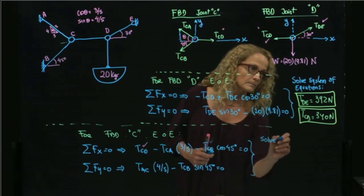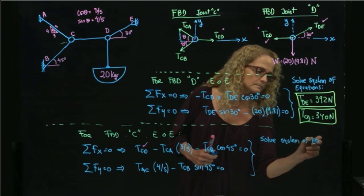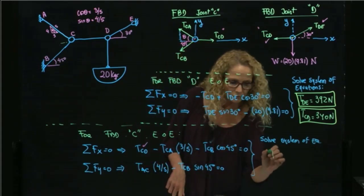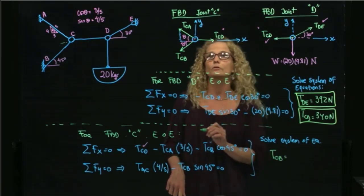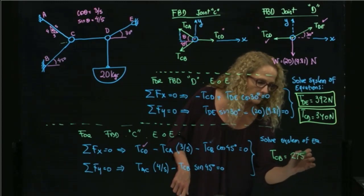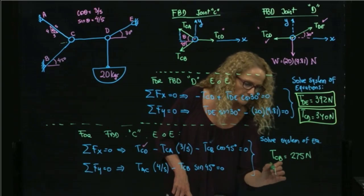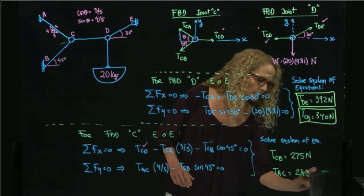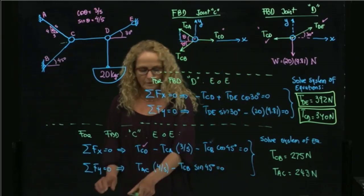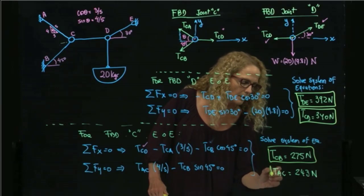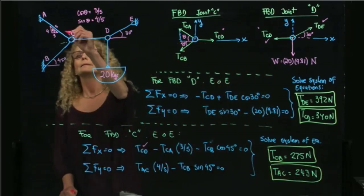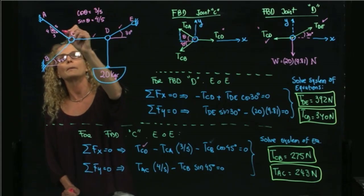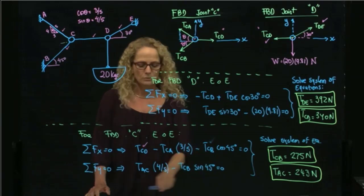Solving the system of equations, we get tension T_CB equals 275 Newtons and tension T_AC equals 243 Newtons. Those are the values we were looking for. We first found the tensions in cables DE and CD from joint D, and then used that result to find the remaining two tensions at joint C. This is the complete solution of the problem.